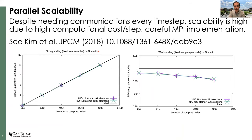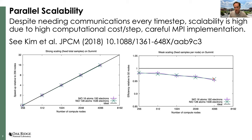I'm only going to mention parallel scalability briefly because it's something we've done the work on. We do have to communicate every time step in the Monte Carlo, which isn't ideal, but the large compute cost per time step saves us. Here on the left we see strong scaling results, basically ideal going up to 4,000 Summit nodes. On the right, weak scaling from 200 to 1,500 electrons, above about 95% efficiency running on 4,000 nodes. So not perfect, but well in the high 90s for a typical run.